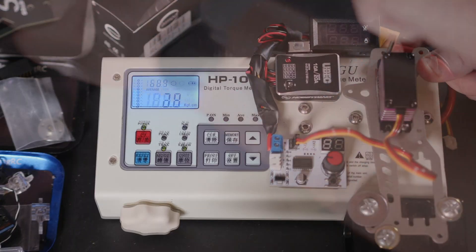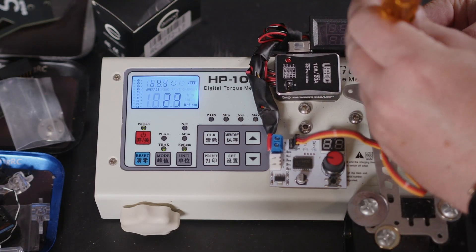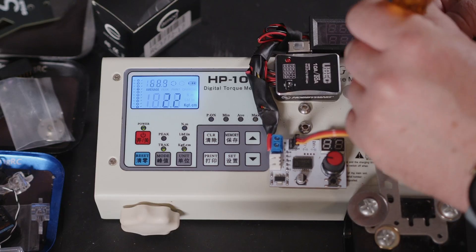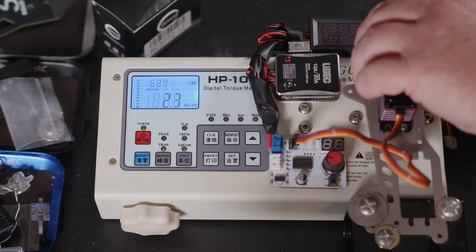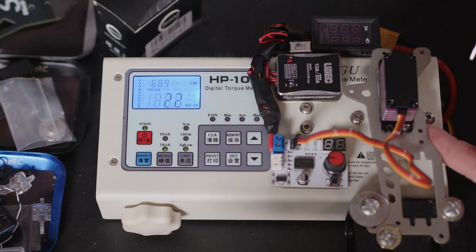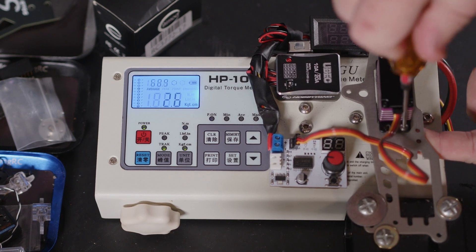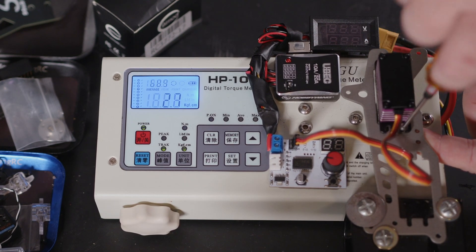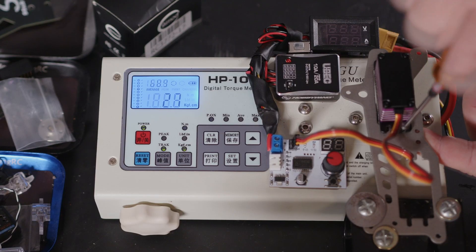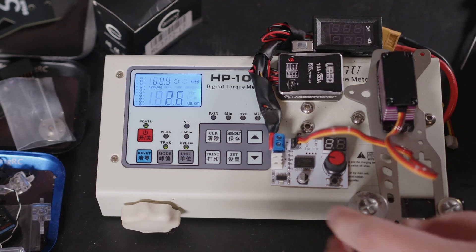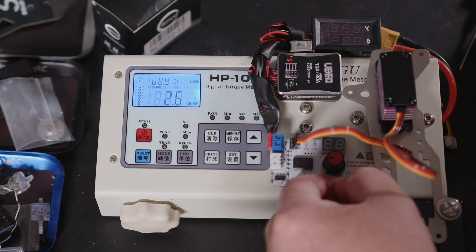When you're getting to this sort of price, like 50 quid servo hitting these sort of figures, yeah, I'm massively impressed. The only one that would stand out to me is the AGFRC, when they claimed a 75 kilogram, I think it actually pulled 76, but you're talking almost a couple hundred pounds for that.